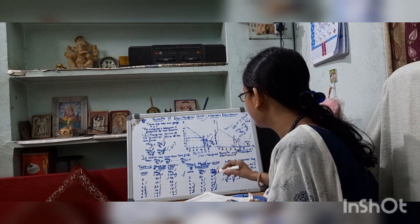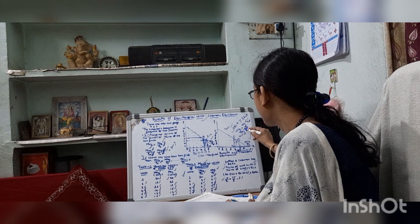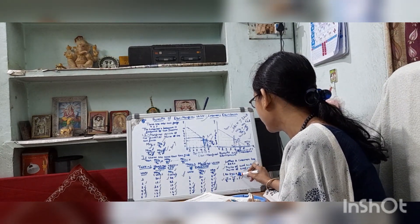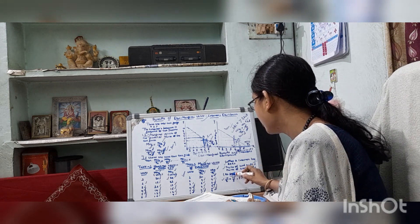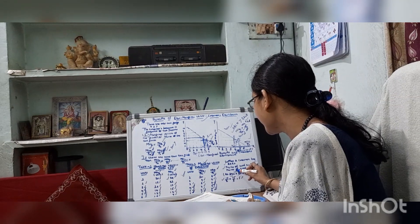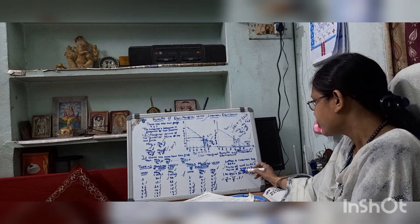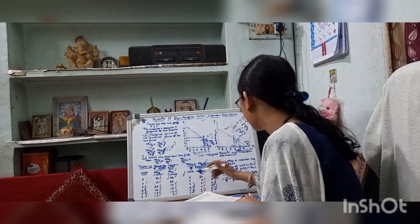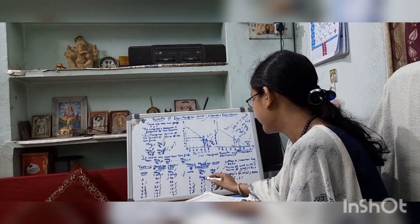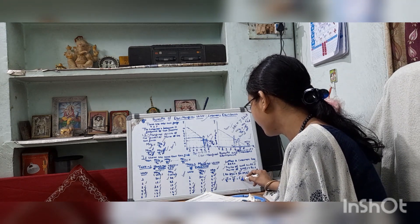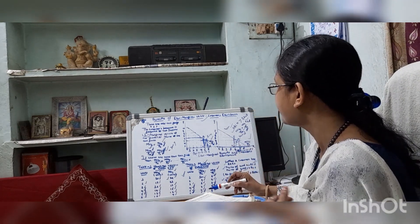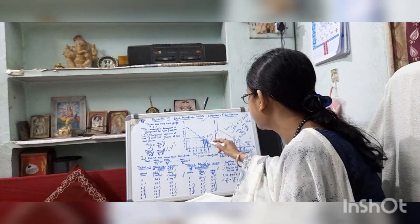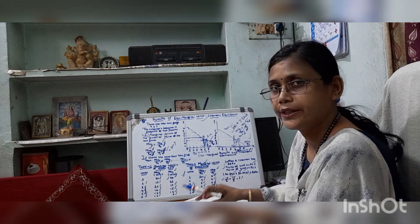At equilibrium: rupees 2 multiplied by 6 units of X, plus rupees 3 multiplied by 4 units of Y equals 24 rupees — which exactly matches the consumer's income. Therefore, 10 divided by 2 equals 15 divided by 3 equals 5. So the consumer will be in equilibrium if he consumes 6 units of X and 4 units of Y. This is all about the Principle of Equi-Marginal Utility. Thanks for watching.